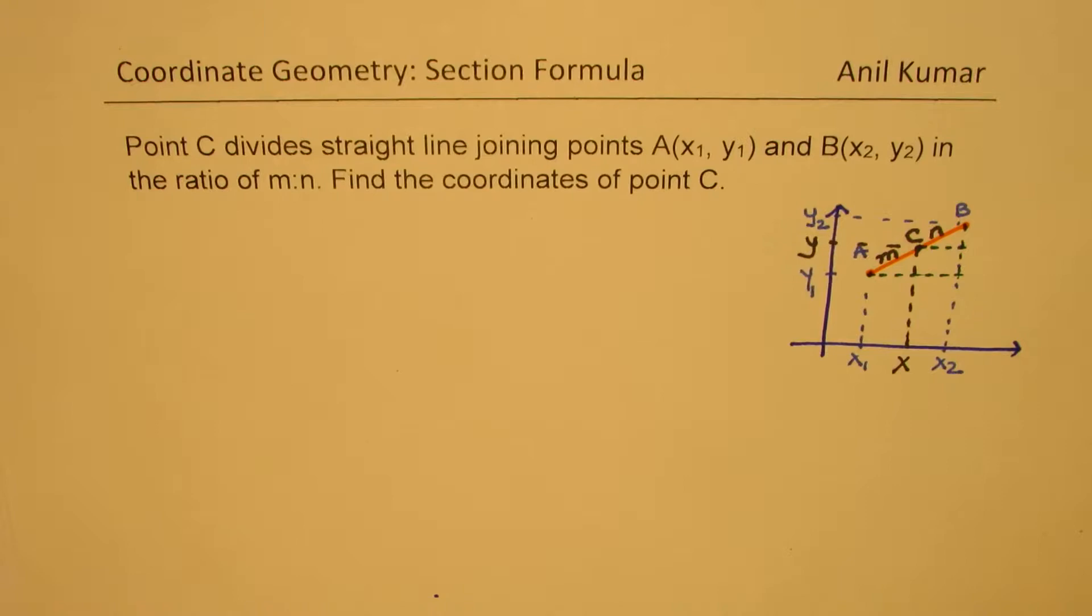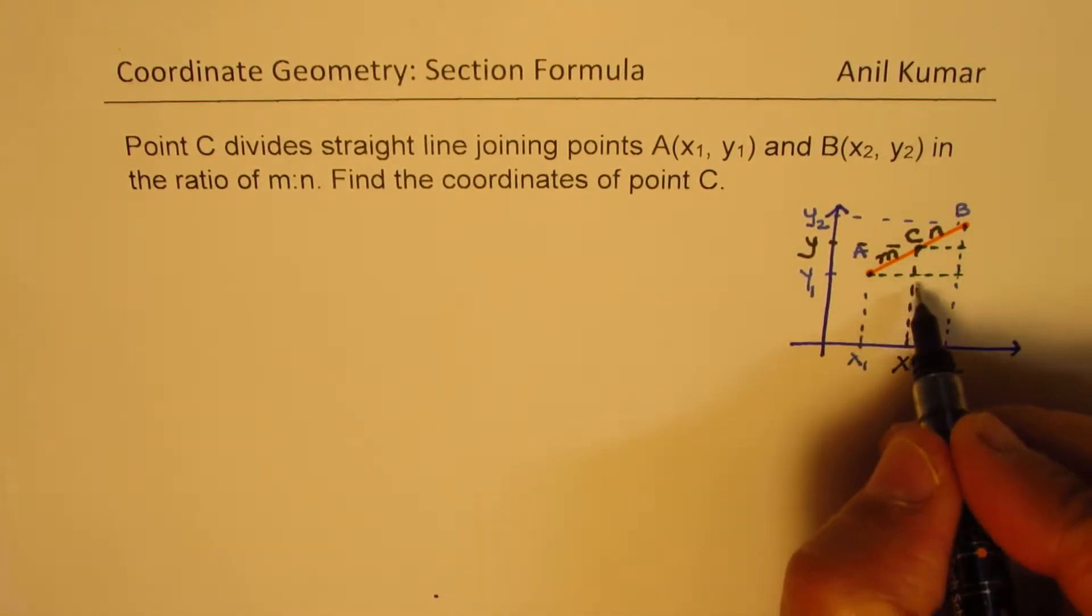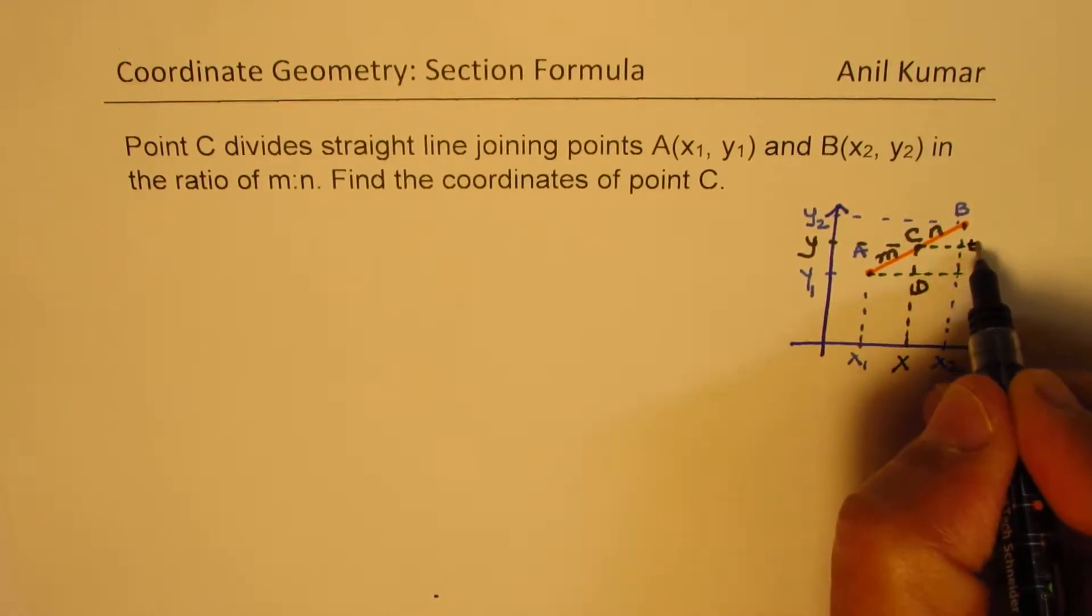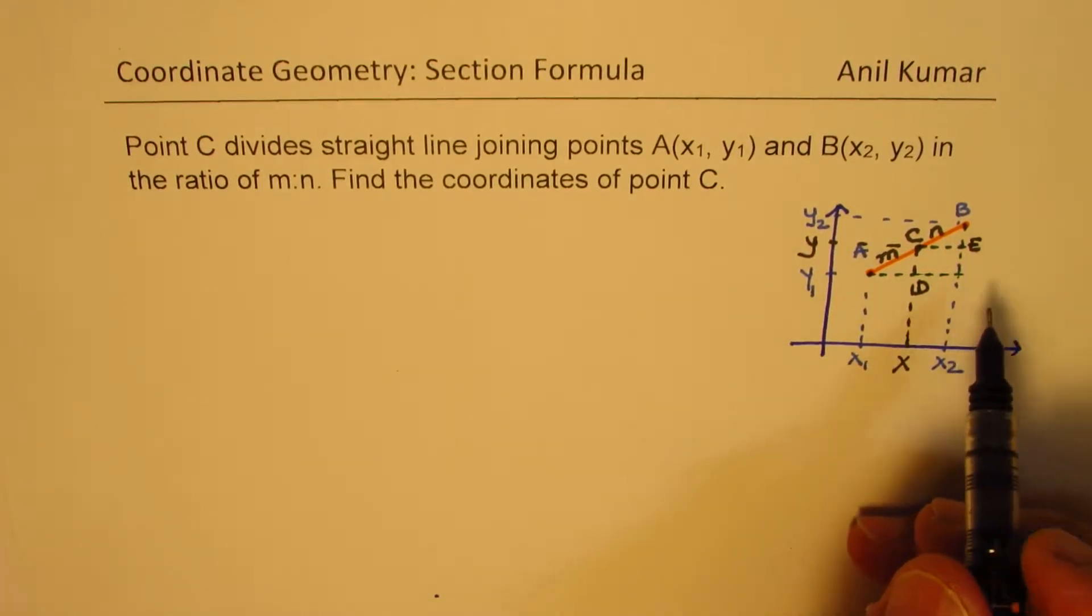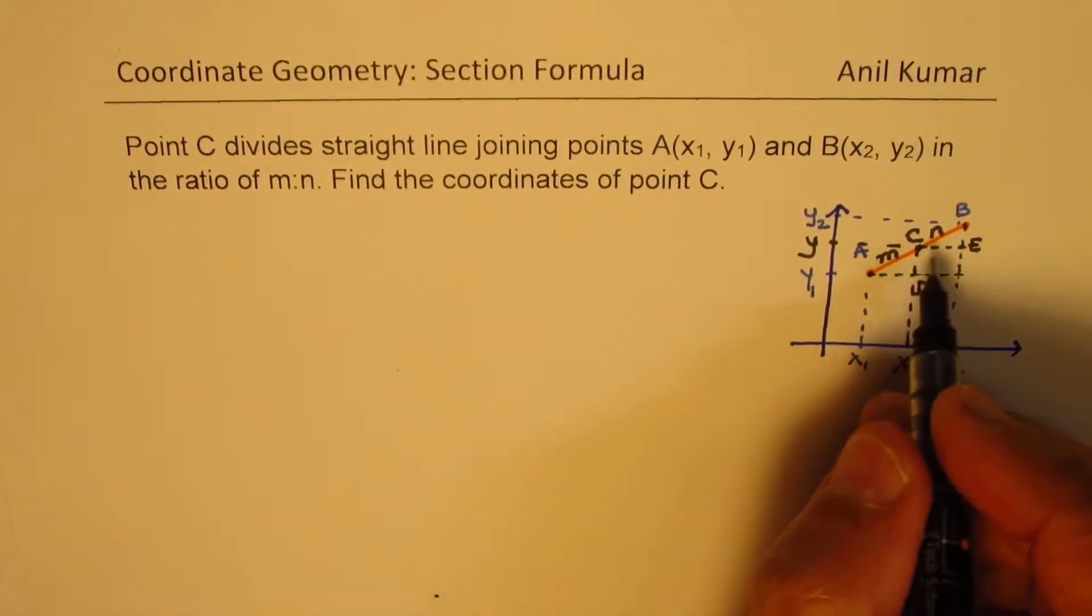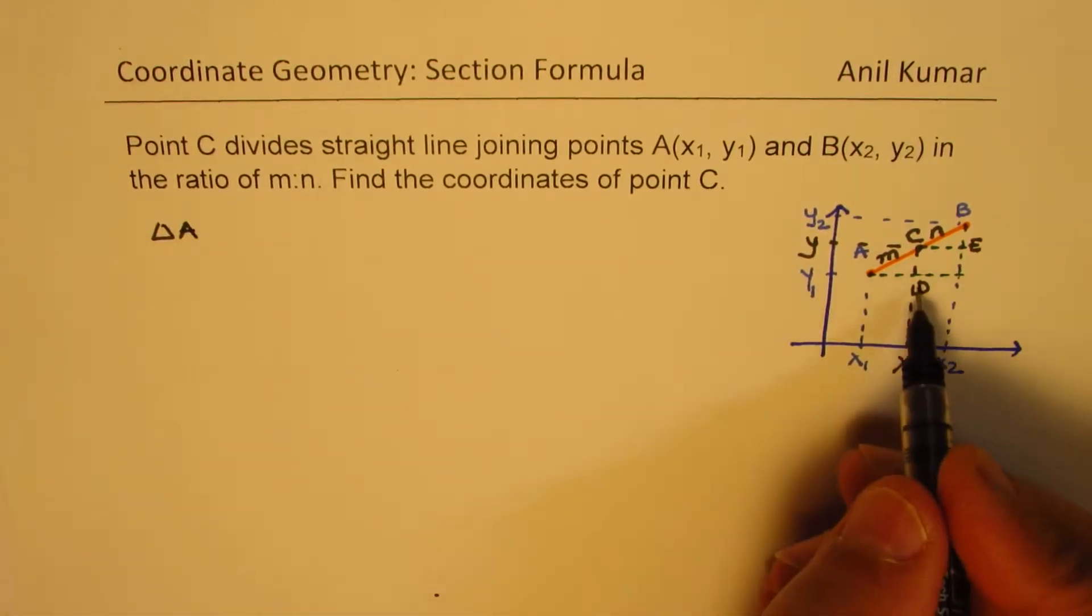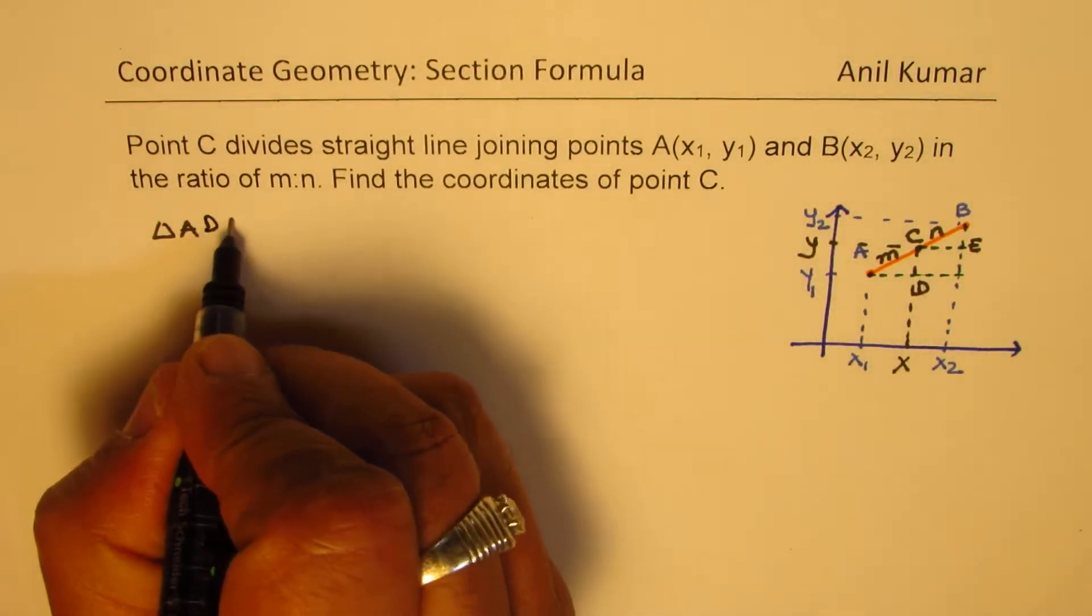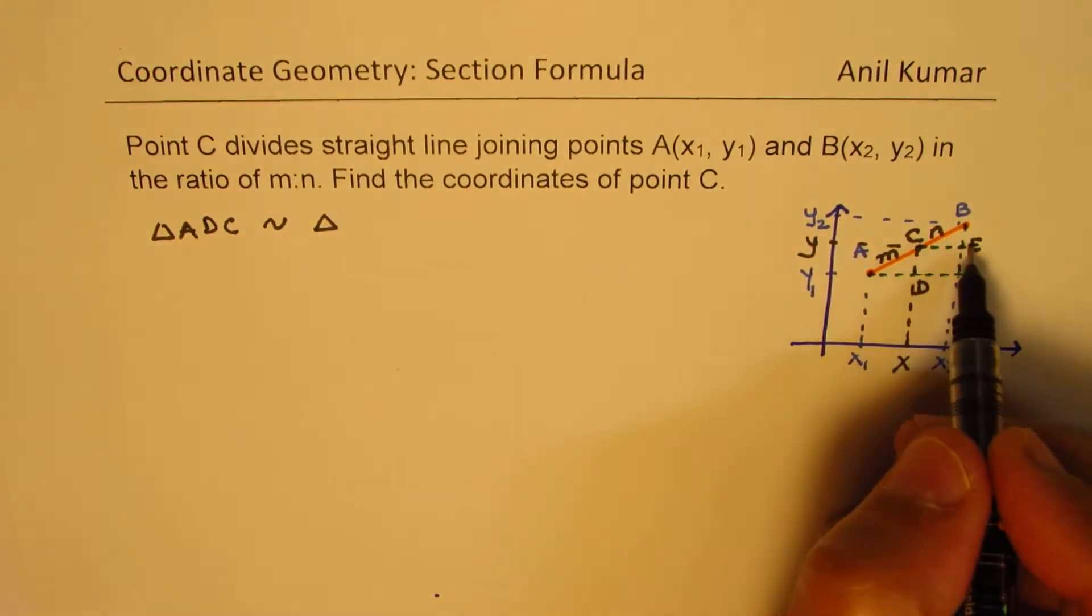And these triangles can be represented as, let's say we call them as D and E. Let's call this point as D and this point as E. Now in that case, you will see that the triangle ADC is similar to triangle CEB.